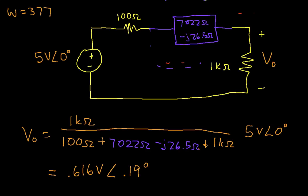So we're almost there. We now have the phasor voltage at the output. Now we can go back and rewrite this as a time voltage. V0 of t will be 0.616 volts, cosine 377t plus 0.19 degrees. That basically shows how to do this analysis.